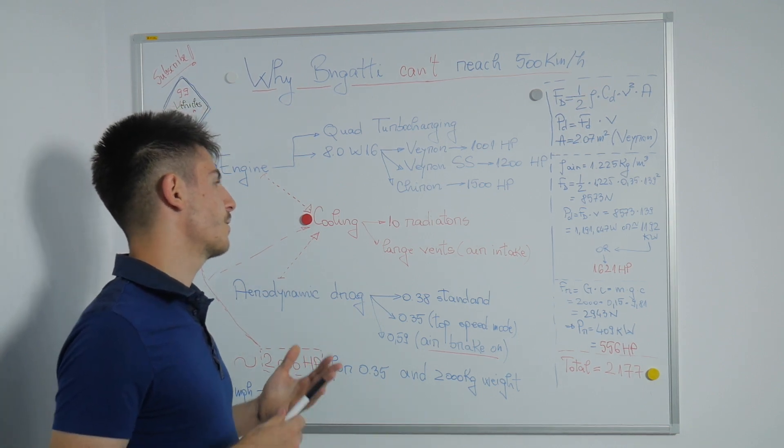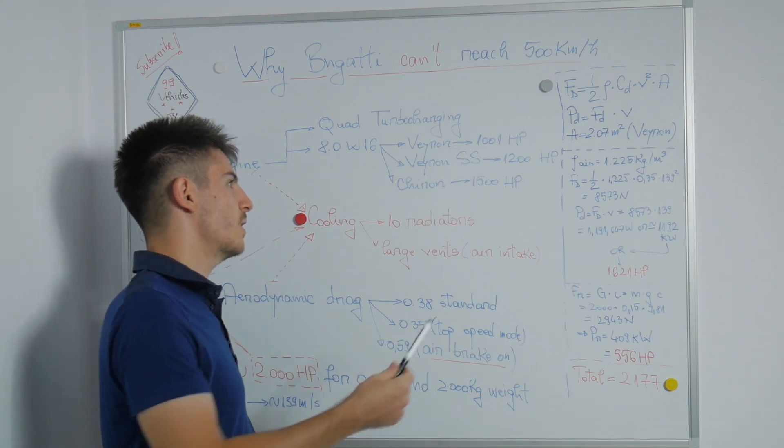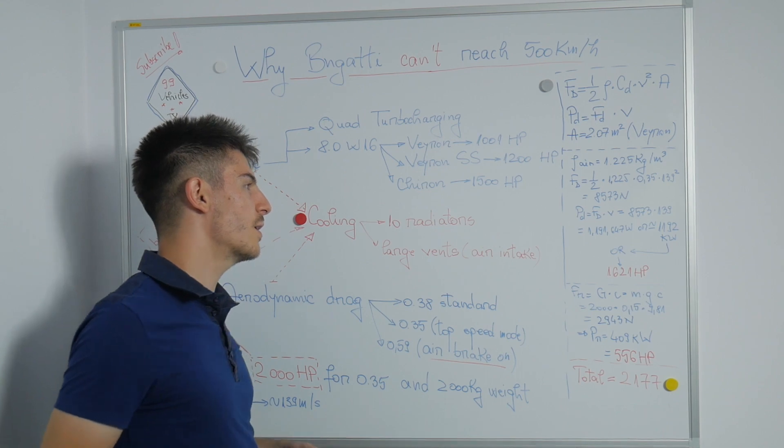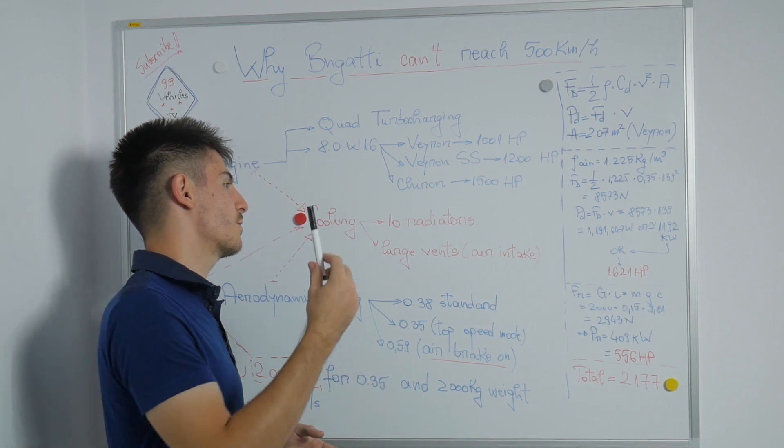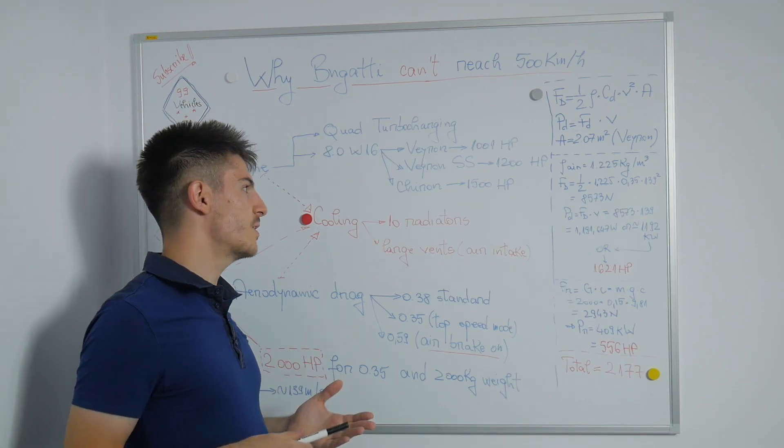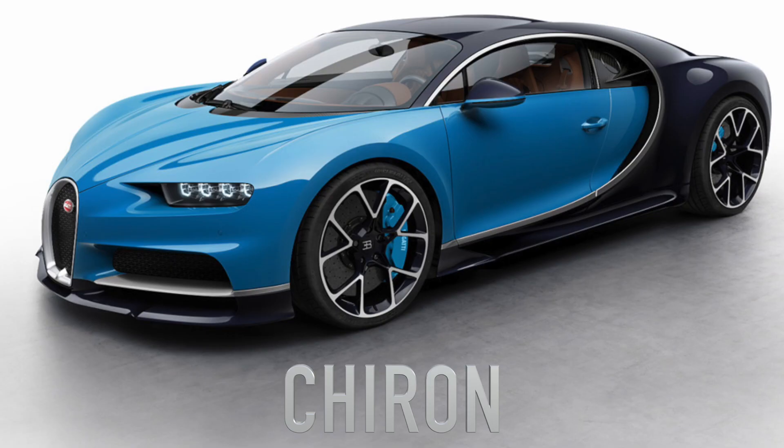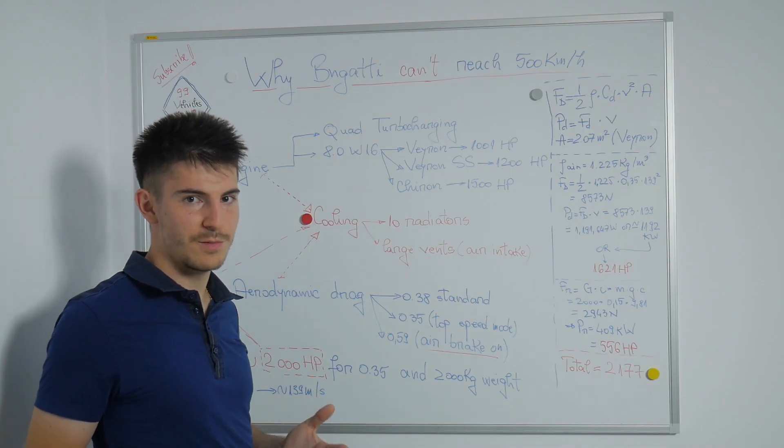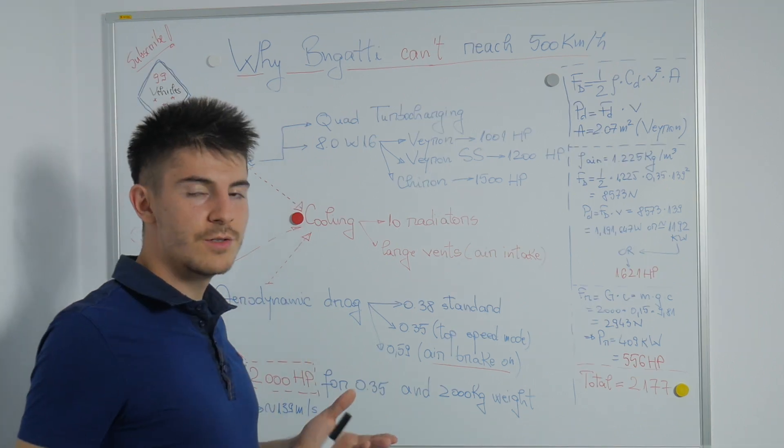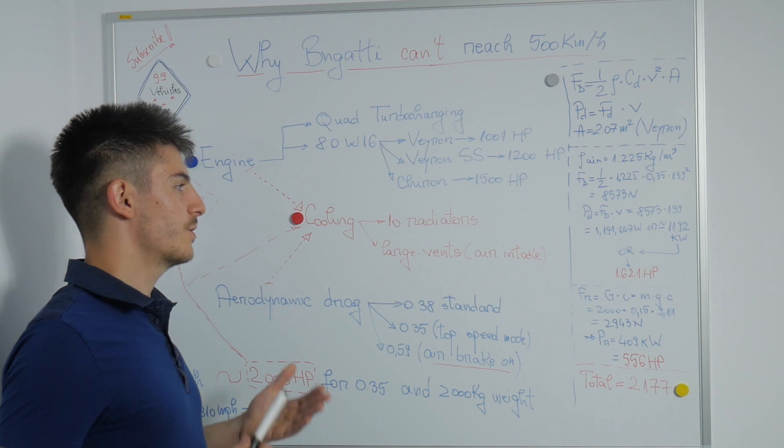However, the Veyron had only up to 1,001 horsepower, and later on the Veyron Super Sport had 1,200 horsepower. In 2016, a new Bugatti model came out, the Chiron, which had 1,500 horsepower. However, none of them can surpass 500 kilometers per hour. Bugatti could have used a more powerful version of the engine, but to have a lot of power you need to cool the engine down, and that's a serious problem for engineers.